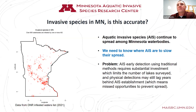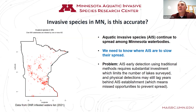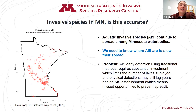A lot of invasive species continue to spread among Minnesota water bodies, and we really need to know where they are in order to slow their spread. If you don't know where they are, you can't introduce any actions. AIS early detection using traditional methods requires substantial investment, which limits the number of lakes surveyed. Physical detections may still lag years behind AIS establishment, meaning missed opportunities to prevent their spread either through taking actions or just notifying users of nearby boat launches.